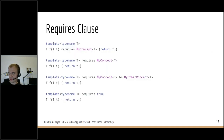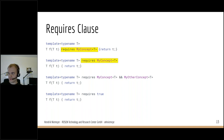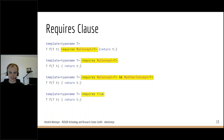Let's look more deeply at requires clauses. The keyword requires introduces a requires clause which specifies a constraint on a template argument. It can appear as the last element of a function declarator or right after the template parameter list. The requires keyword must be followed by a constant expression — for example a named concept, a logical combination of concepts, or really any constant expression that evaluates to bool. The intention is to use named concepts here.